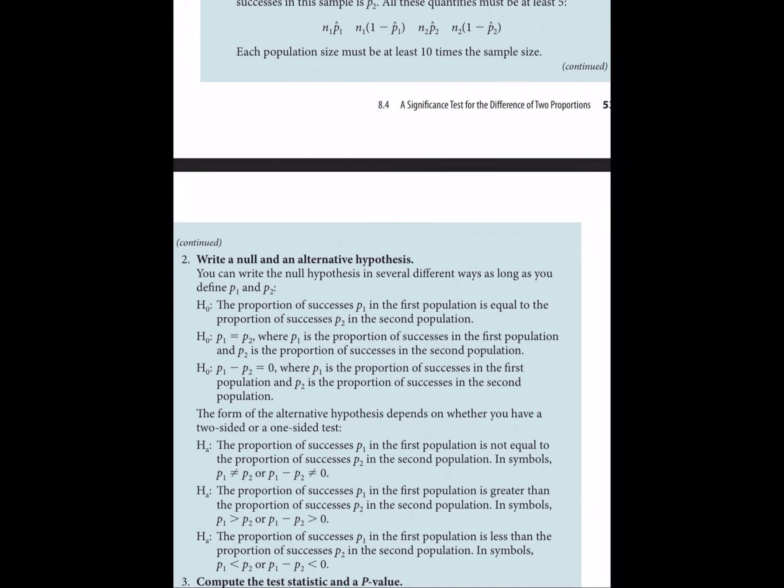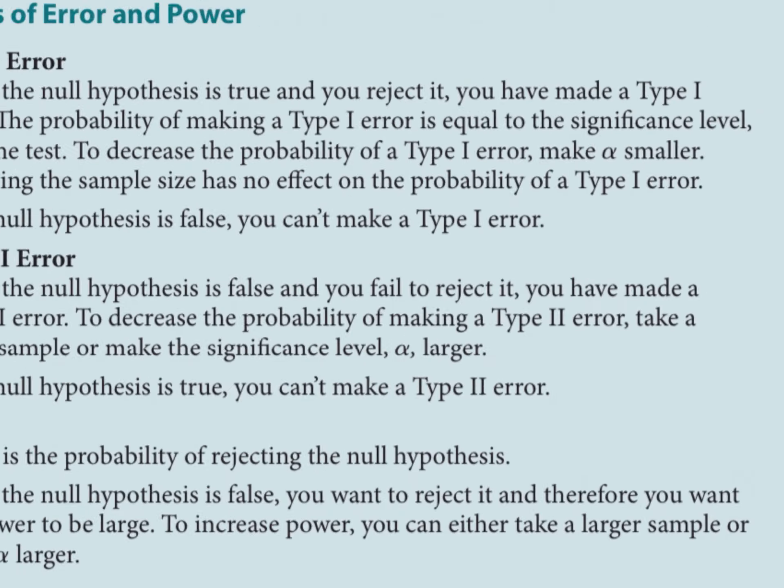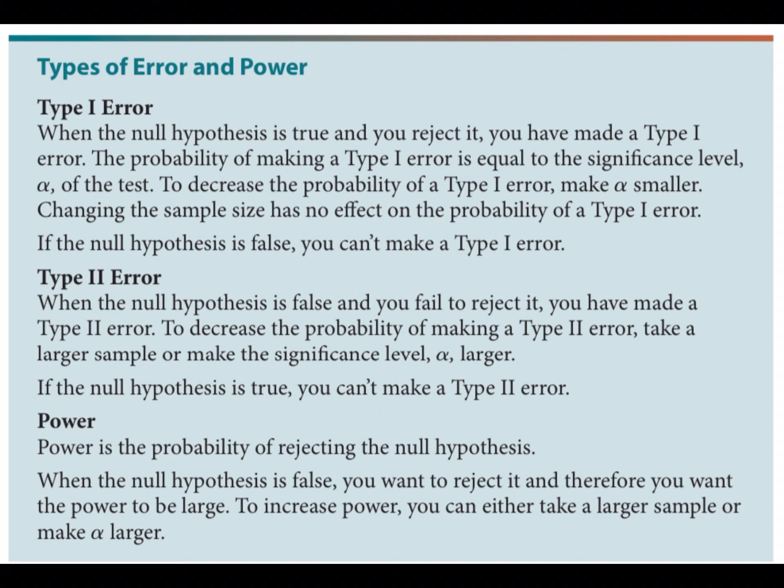We also learned about types of errors. A Type I error is when you reject something that is actually true. A Type II error is when you don't reject something that is false. The power of a test is defined as the probability of rejecting the null hypothesis — but I find it easier to explain power as anything that causes a confidence interval to get narrower and more precise. Increasing sample size increases power. Decreasing your confidence level also technically increases power, though increasing sample size is the preferred approach.